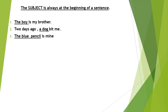Number three: 'The blue pencil is mine.' So what is the subject? The blue pencil — the thing. Number four: 'Kuala Lumpur is a big city.' Subject: Kuala Lumpur. This is a place.